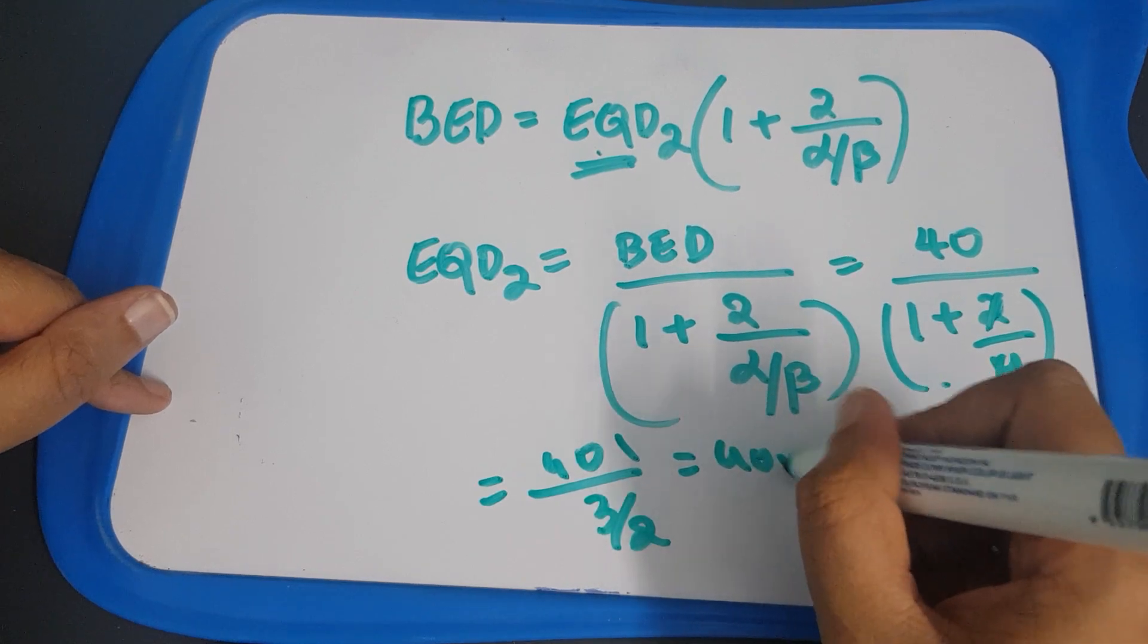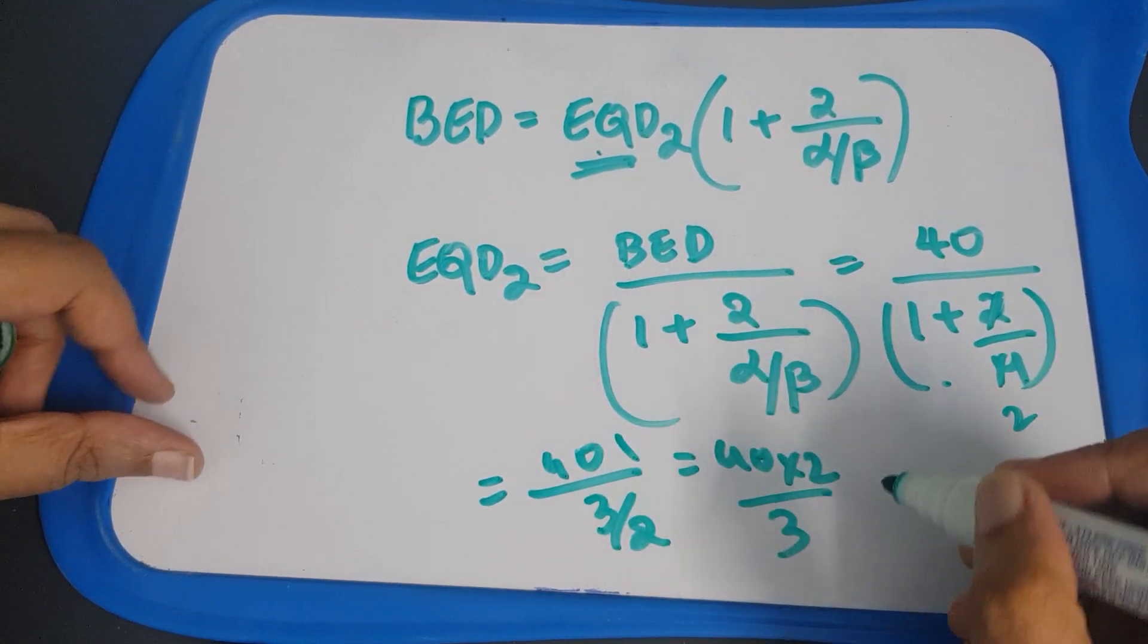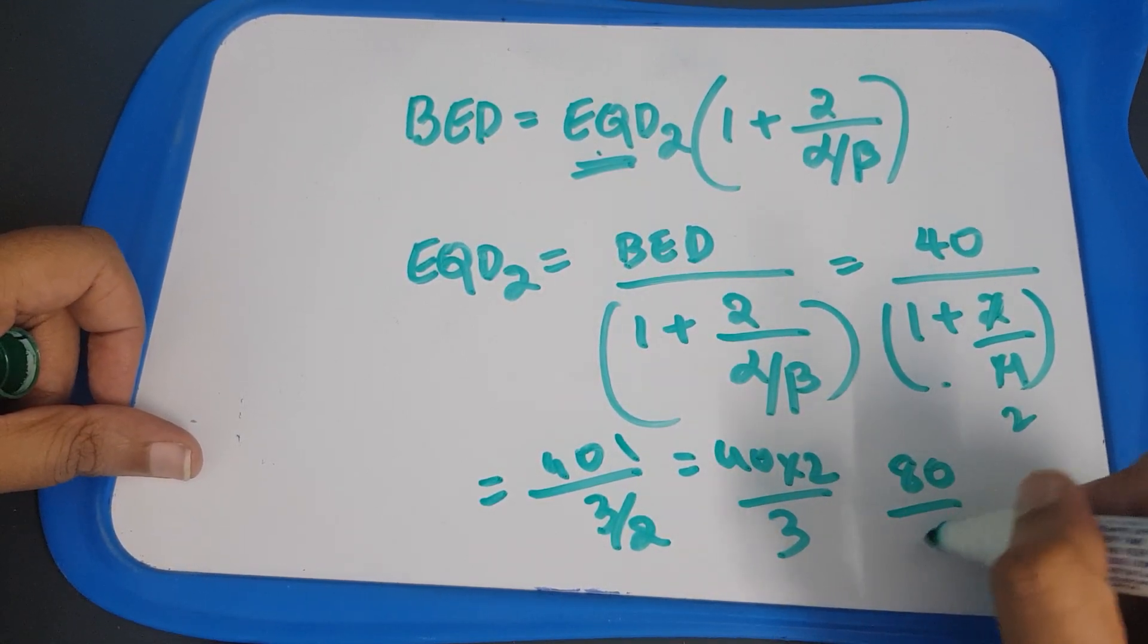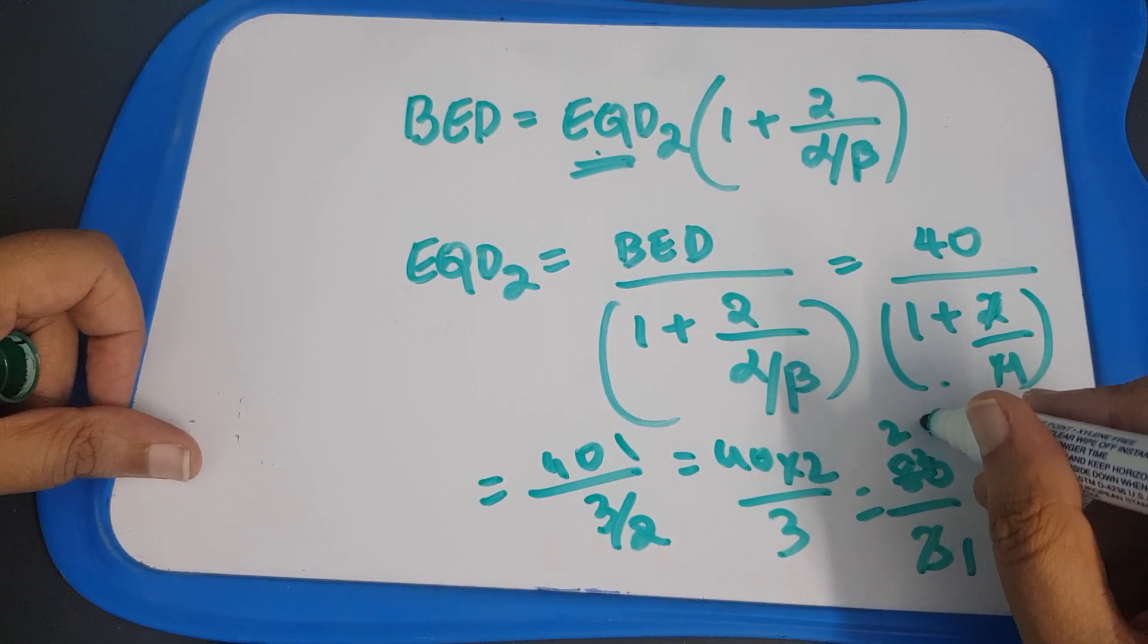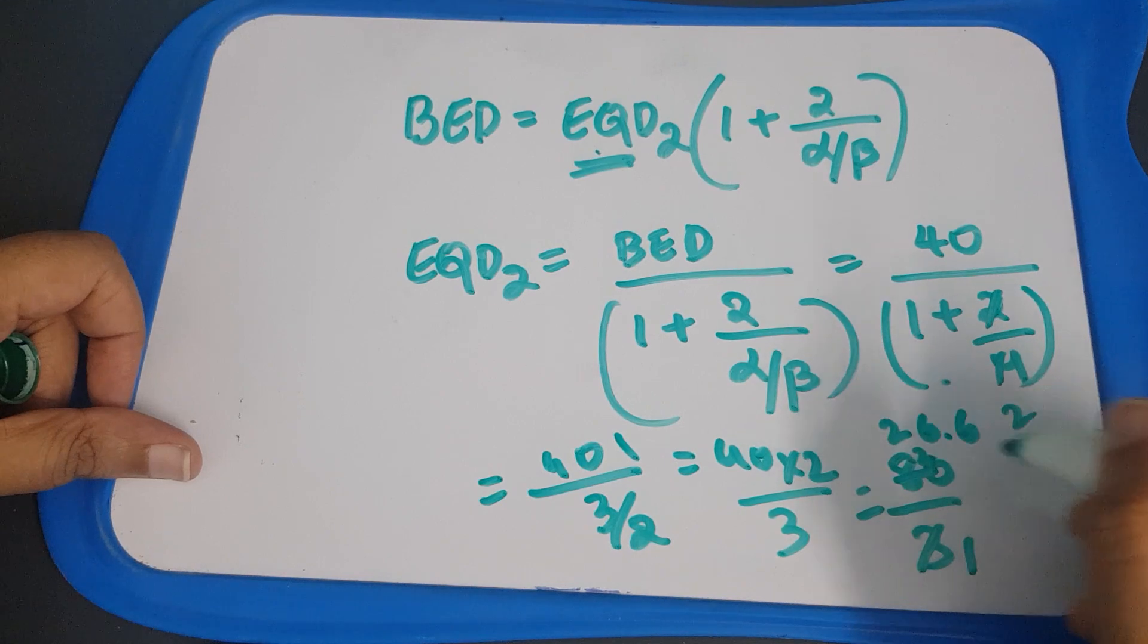It is 40 divided by 3 by 2. It is 40 into 2 divided by 3. 80 by 3, 6 to carry up, 26.6.